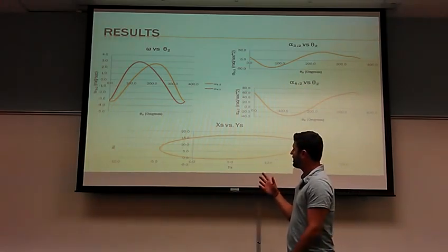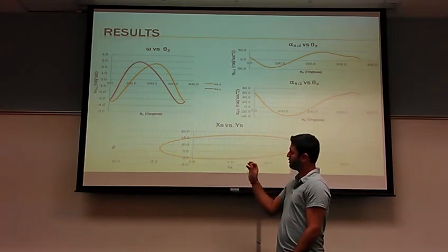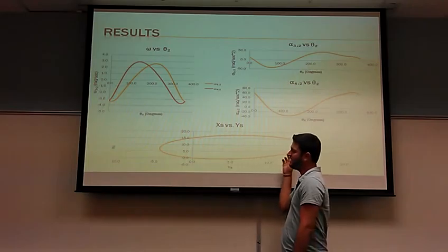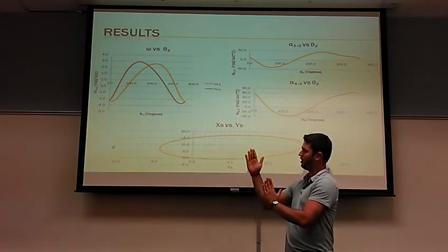And this is the path that we got from the point in the link-3 using a beta of zero. This is basically the path that we're going to have moving our mechanism.